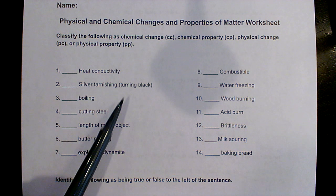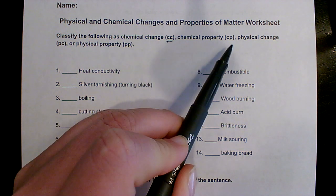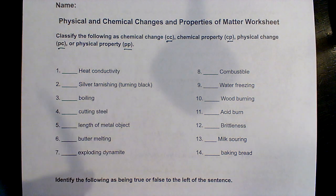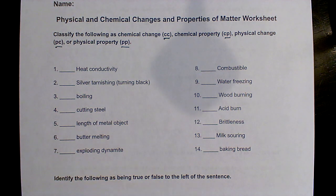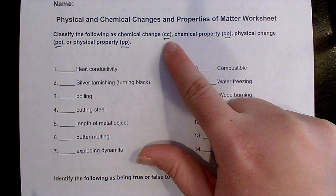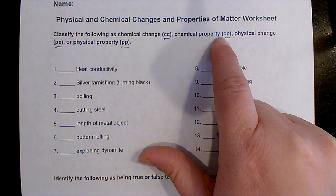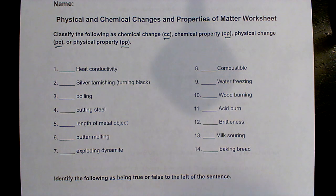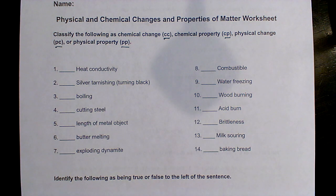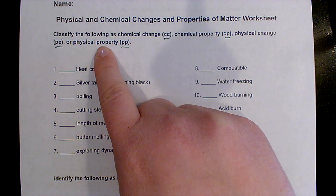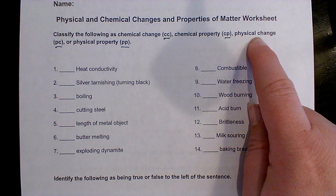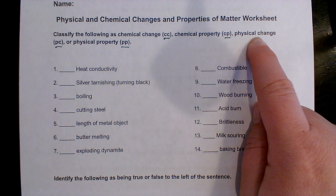We're supposed to mark each of these as either a chemical change, chemical property, physical change, or physical property. If it is chemical, we are changing what it is, or it has the ability to literally change the substance itself. In a physical change or physical property, it's either an observation of something without changing what it is, or changing something about it that doesn't change what it is.